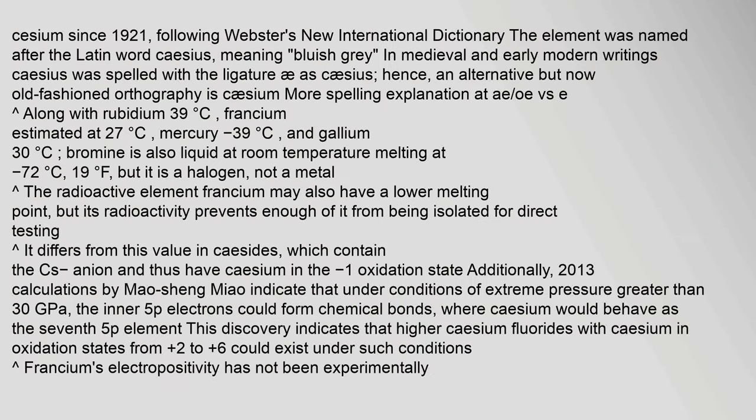Since 1921, following Webster's New International Dictionary, the element has been named after the Latin word caesius, meaning bluish-gray. In medieval and early modern writings, caesius was spelled with the ligature 'ae' as caesius, hence the alternative but now old-fashioned orthography 'caesium'. Along with rubidium, caesium has the lowest ionization energy among the elements.